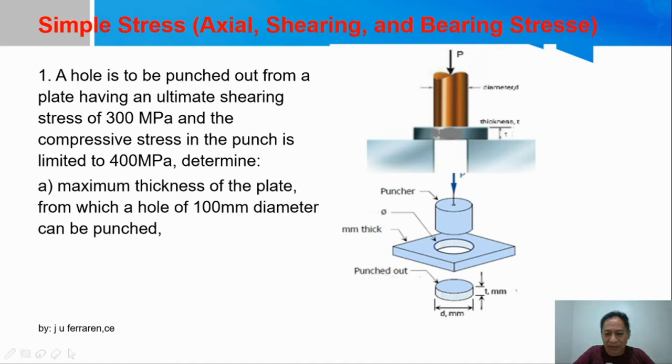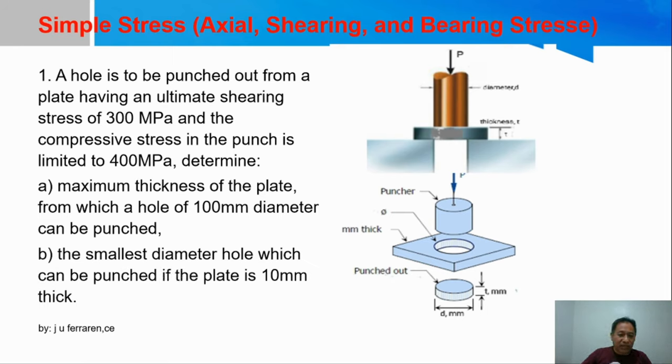The figure is there also, and here is the requirement. You are required to determine the maximum thickness of the plate when the hole diameter is equal to 100 mm. You are also required to give the smallest diameter hole when the thickness is the one which is given instead.